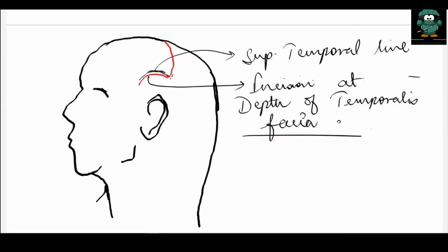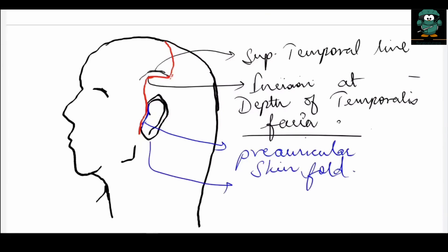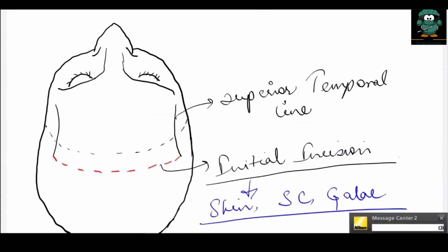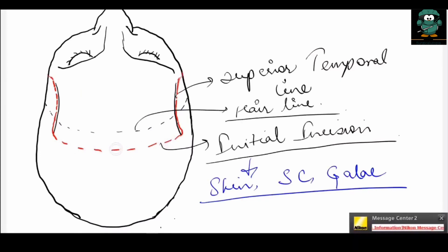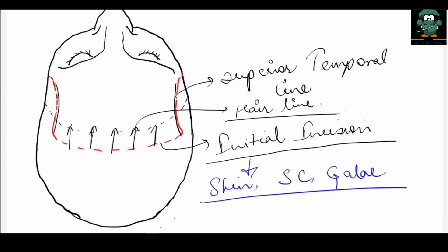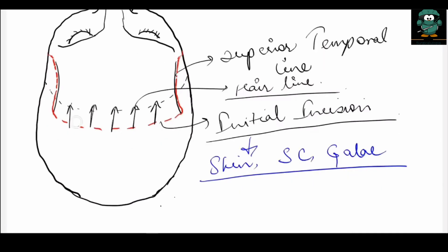The incision can be extended to the pre-auricular aspect, up till the ear lobe at the pre-auricular skin fold. After the wound margin is elevated for up to one to two centimeters, hemostatic clips are placed on the bleeding vessels or these vessels are cauterized. The flap is then dissected in the anterior region, either by periosteal elevator or by finger dissection.